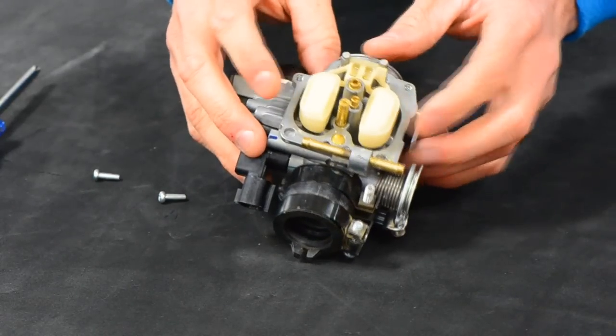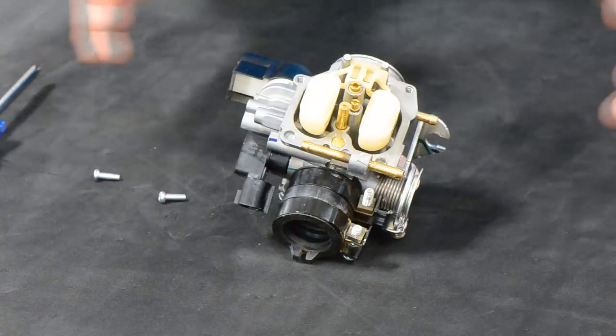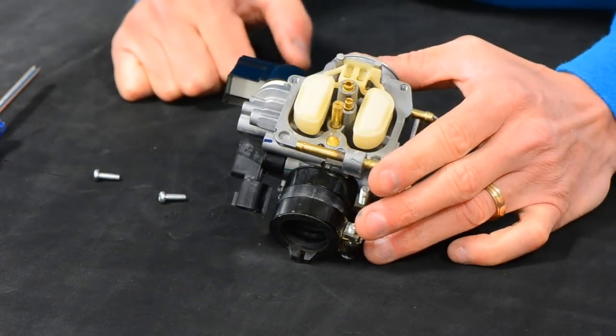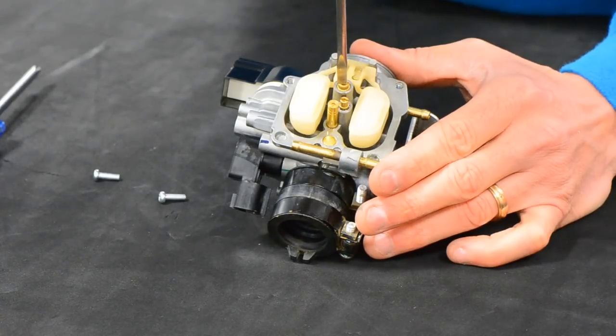Now we have some floats, needle and valve here, a little pin that holds this mechanism. We're not going to deal with any of that, so don't be concerned about that. The only two things we're going to change will be the pilot jet here and the main jet here.